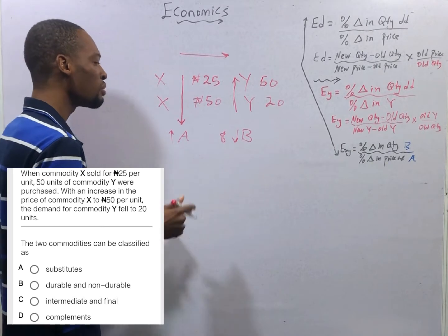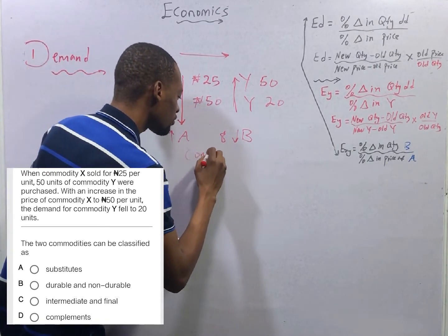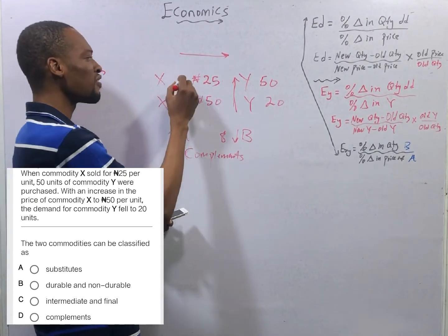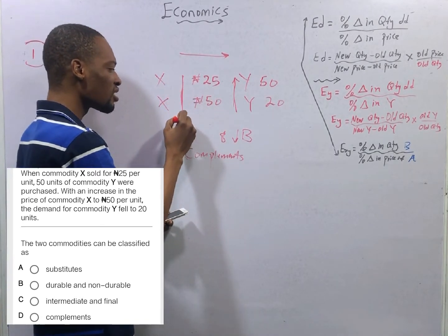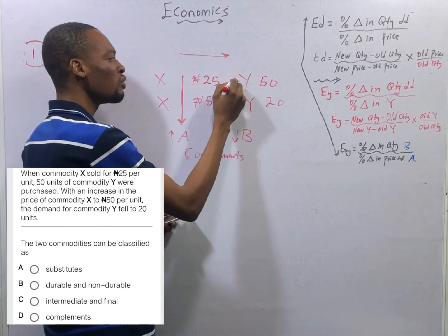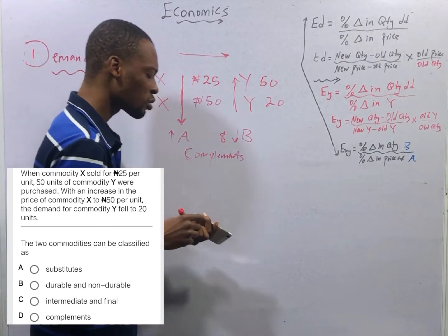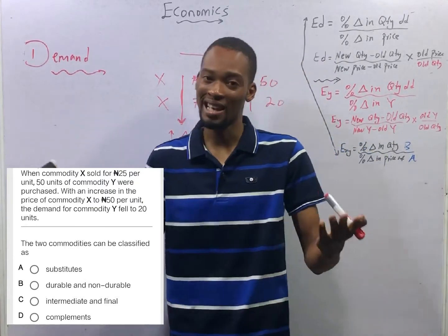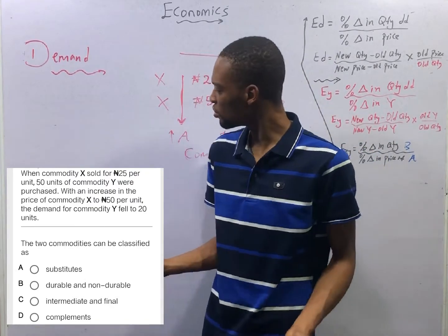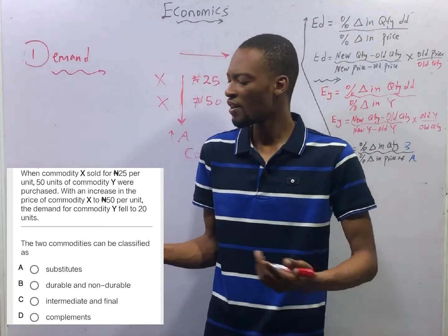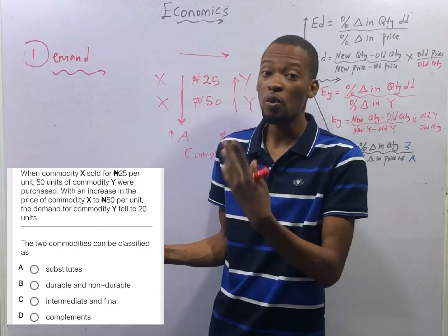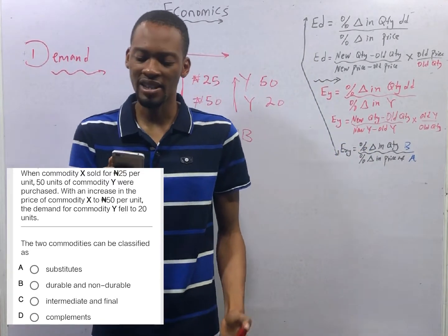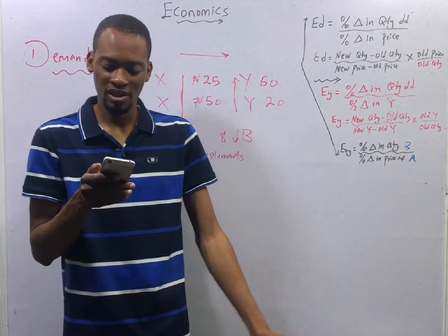If they were substitutes, as the price of A is increasing, then the demand for the substitute will also increase because the demand for this first one is reducing. So, it cannot be because of substitutes. It can simply be because they are complements. For complementary goods, as the price of one increases, the demand for the second one will reduce. Example, stove and kerosene, they are complementary. So, as the price of stove goes very high, people are not able to afford the stove, what will happen? The demand for kerosene, for cooking, will also go down. So, these are complementary goods, as seen in option D.